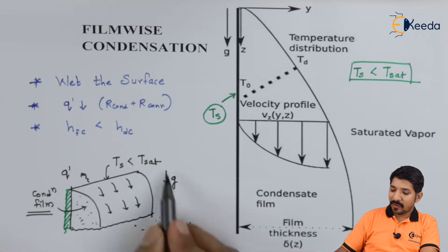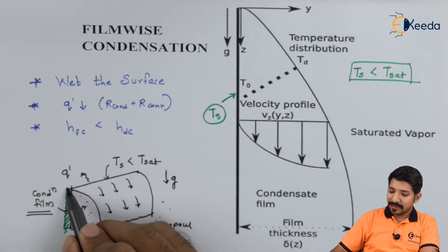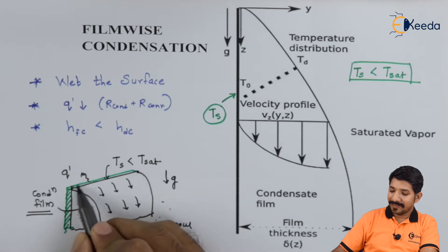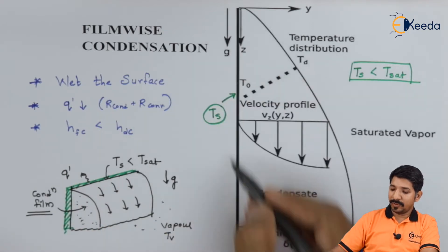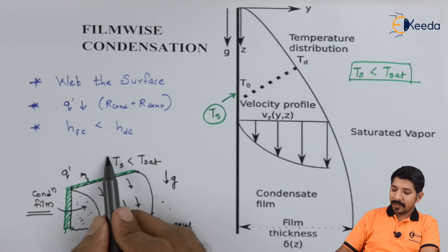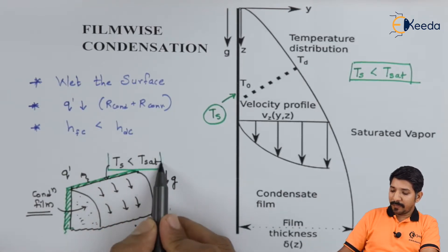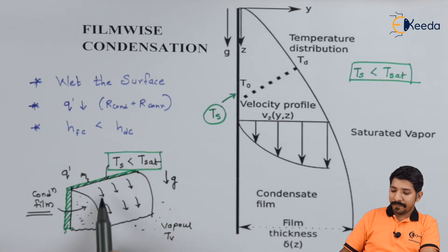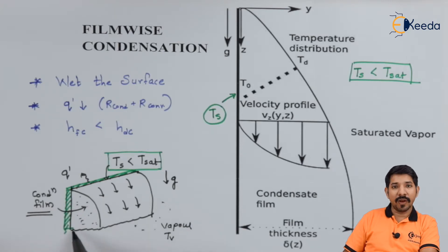We can see this from the same example here. Let us say this is some plate. I have kept the temperature of the plate Ts less than Tsat. A drop will be formed at the upper surface and then that drop will be carried downward due to gravity. This will form a small film over the surface of the wall. This kind of condensation where we form a film over a wall surface during condensation is called filmwise condensation.